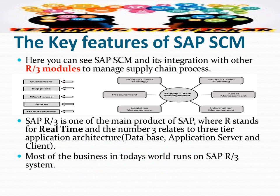From this picture we can see how SAP SCM integrates with other SAP R/3 modules to manage the supply chain process. SAP R/3 is one of the main products of SAP, where 'R' stands for real-time and '3' relates to the three-tier application architecture — database, application services, and the client — and most businesses today are using this system.